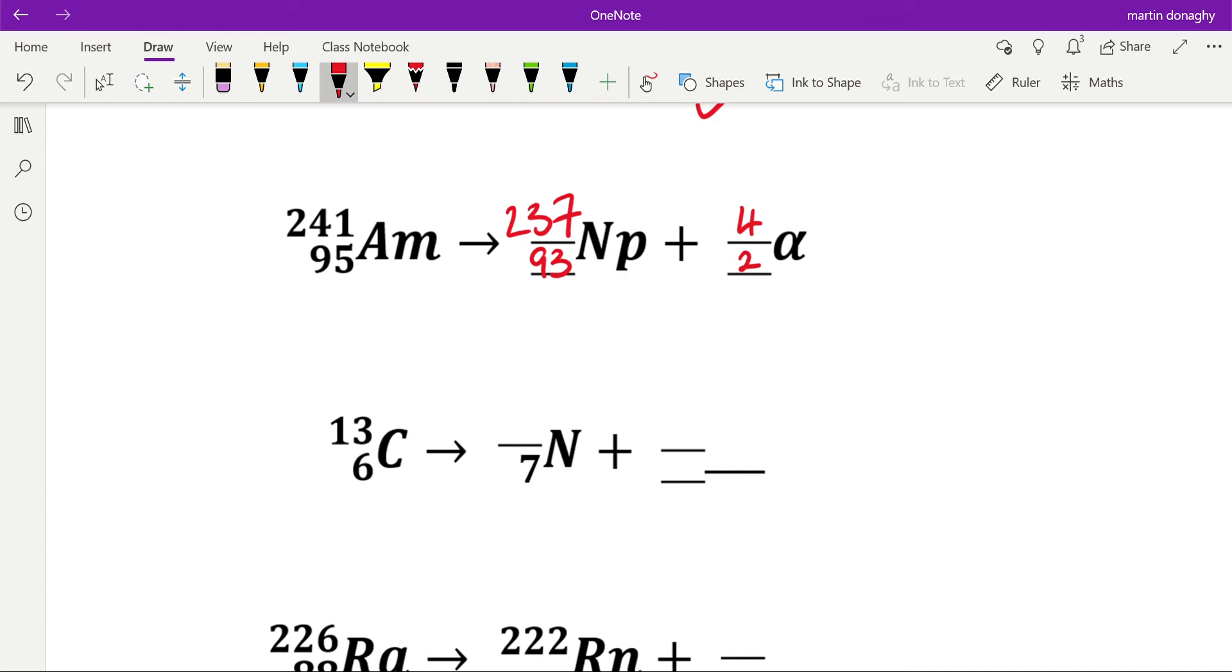Next one, carbon-13, a different isotope than the one we looked at in the example. 6 equals 7 minus 1, which means this has to be beta. Don't be confused—sometimes I might put an e there because beta is an electron, but I tend to use the Greek symbols. We know that beta has a mass number of zero, therefore 13 equals something plus zero. That has to be 13, so a different isotope of nitrogen.